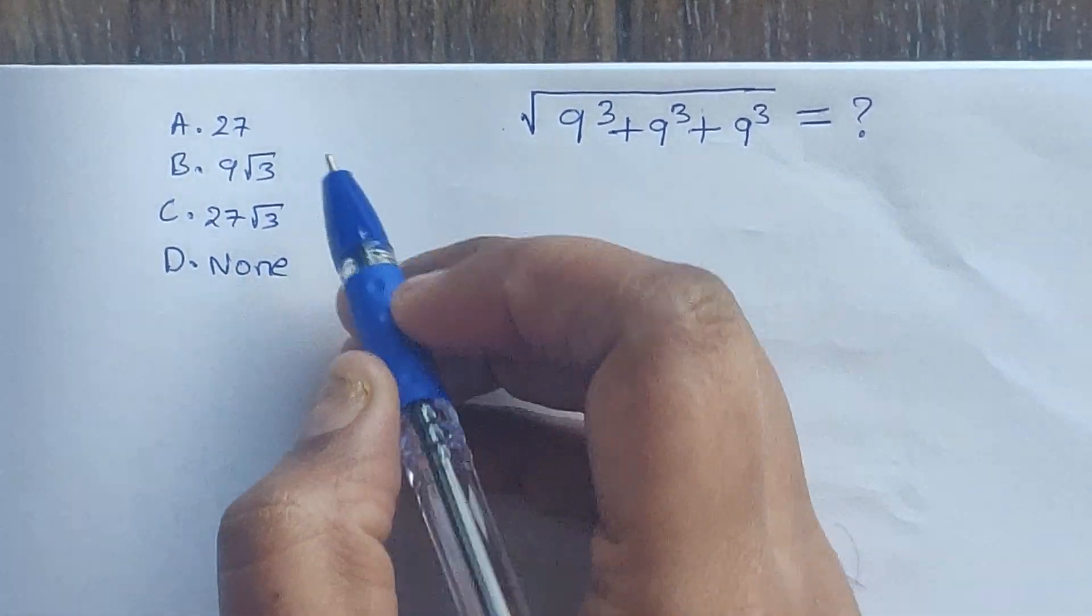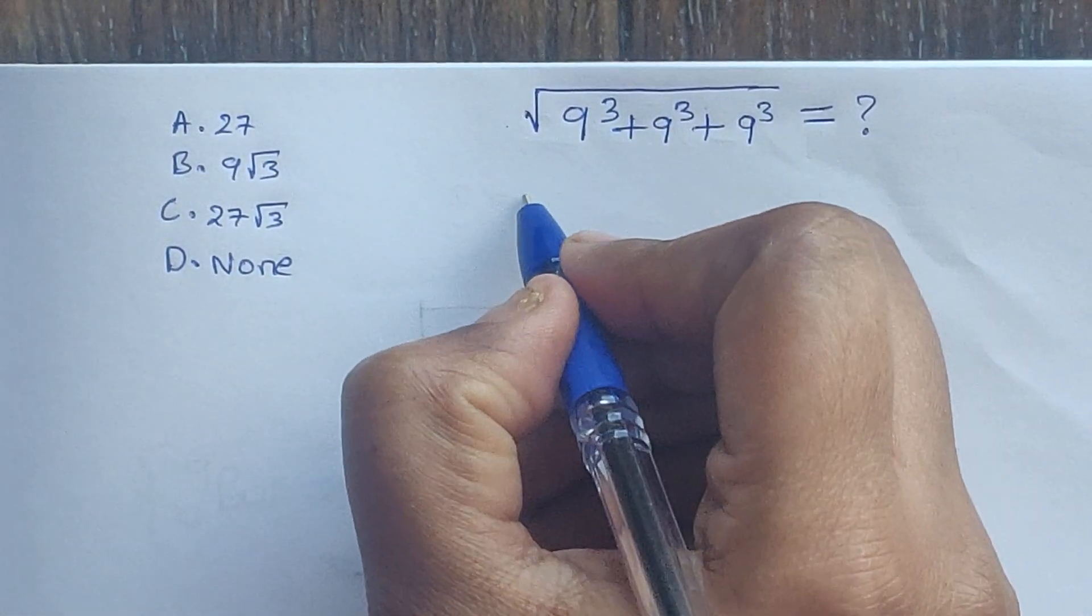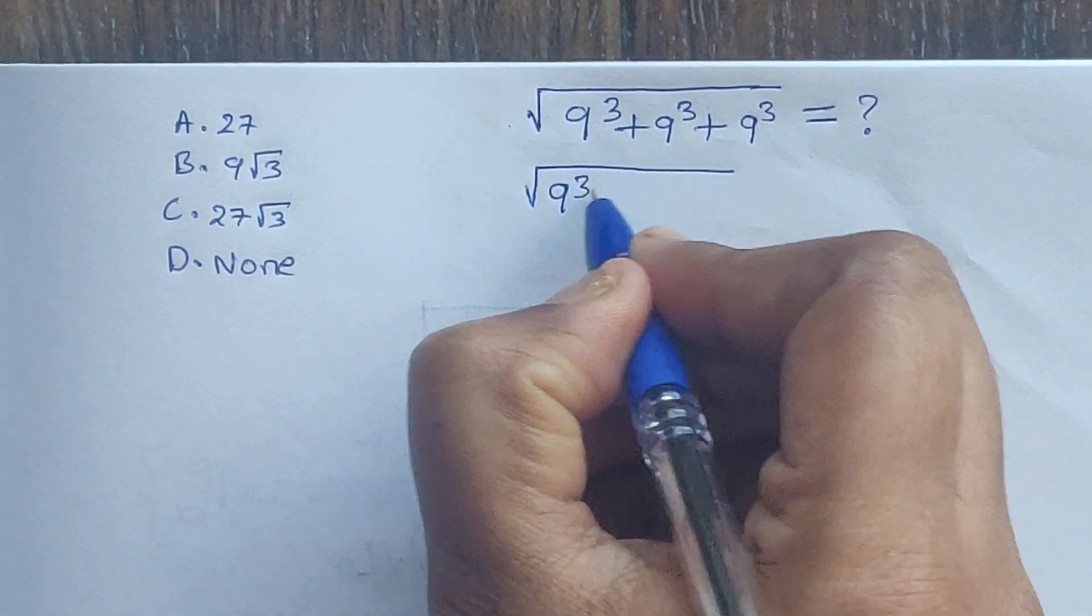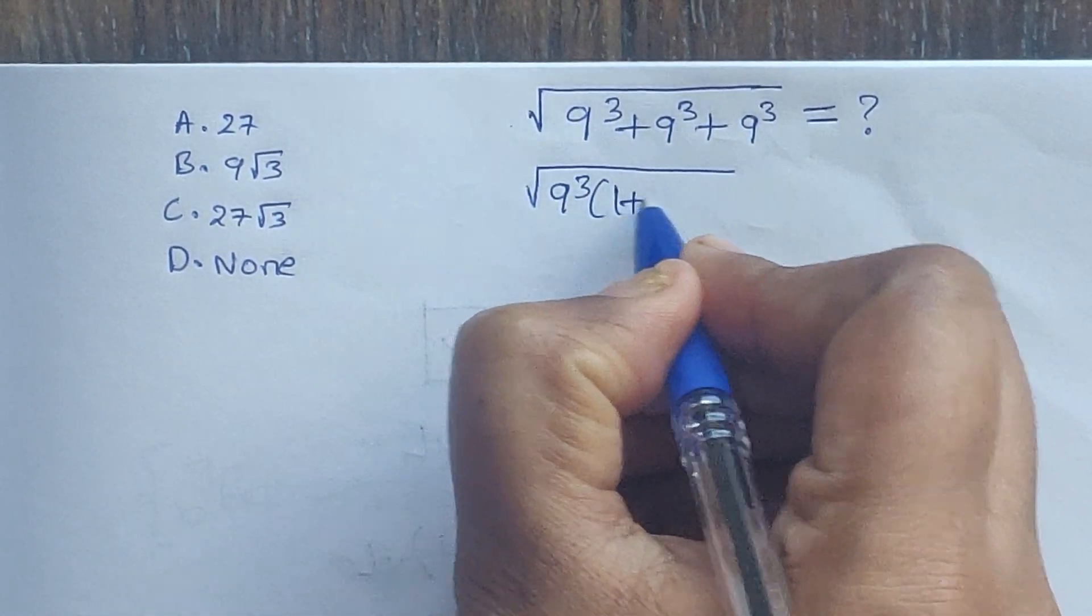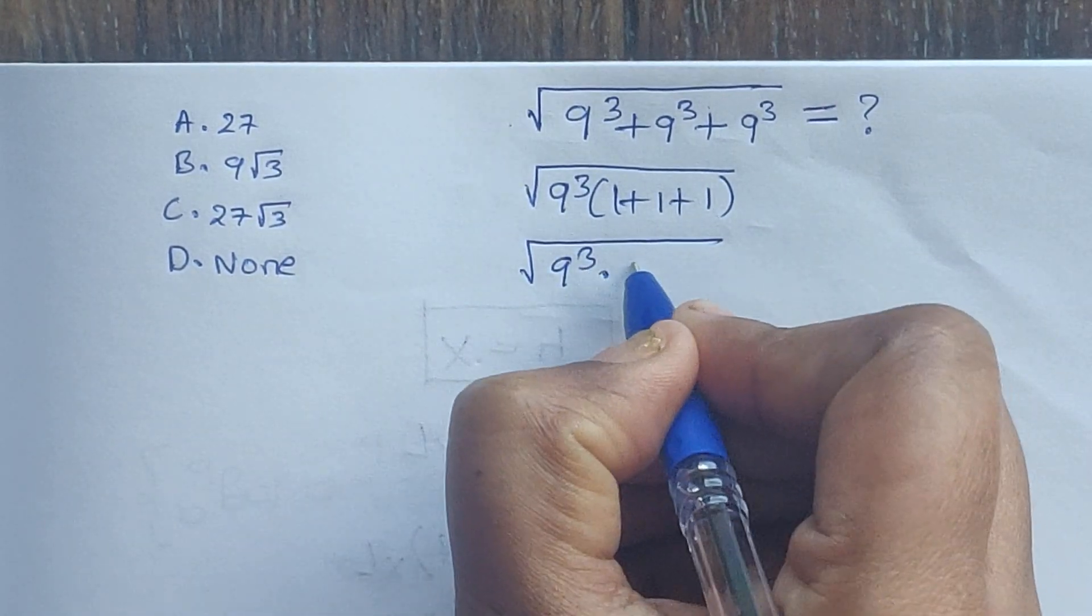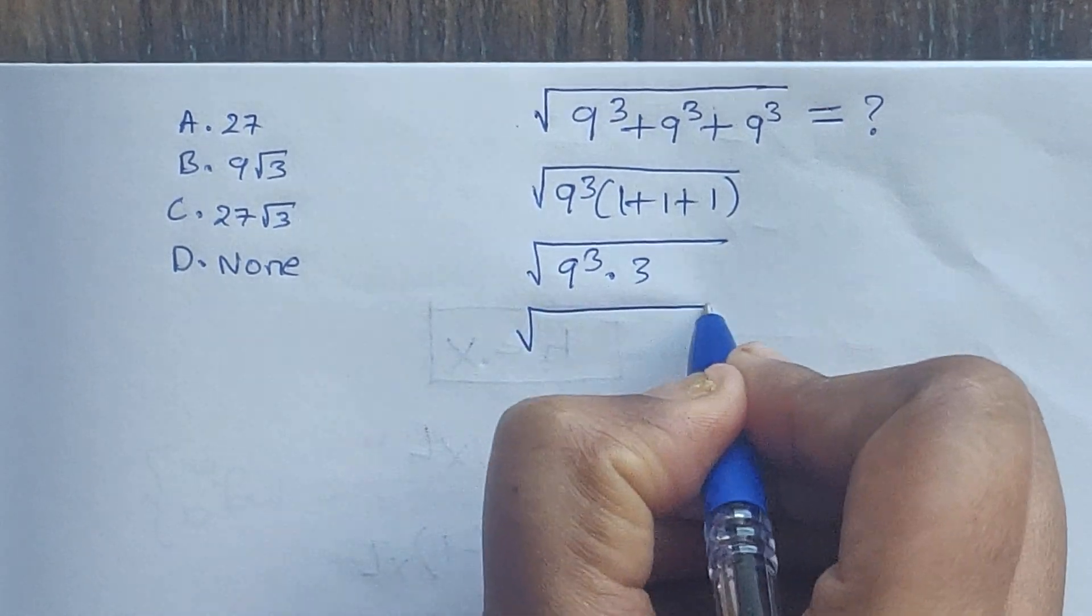Square root of, take out common 9 cube, so 9 cube times (1 plus 1 plus 1). Square root of 9 cube times 3.